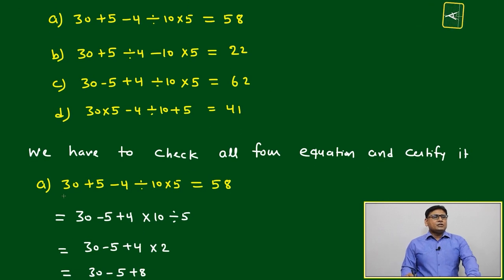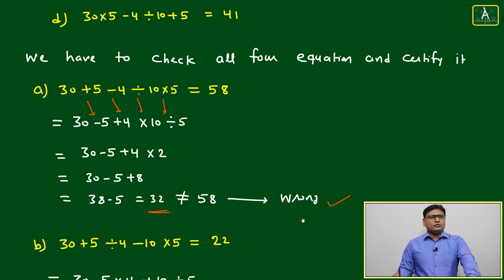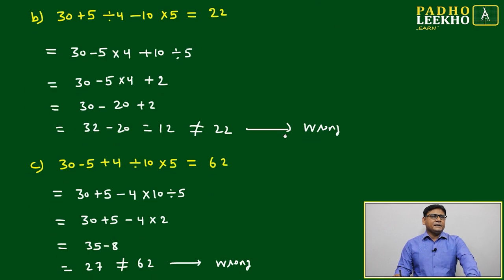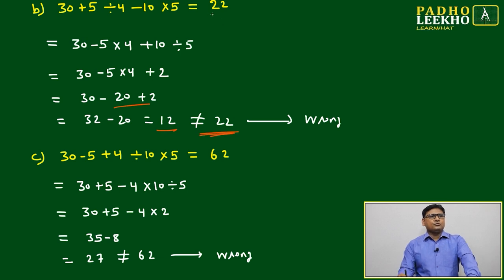Choice A: 30 + 5 - 4 ÷ 10 × 5 = 58. After applying changes, 30 - 5 + 4 × 10 ÷ 5. We change addition to subtraction and subtraction to addition. Is it coming 58? No, it is coming 32, so it is wrong. Similarly, option B: doing the same thing, it is coming 12, not equal to 22 as given, so it is wrong.